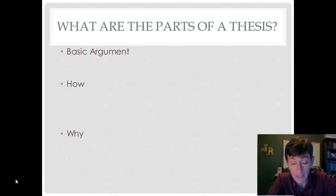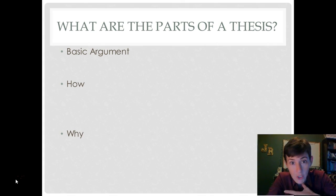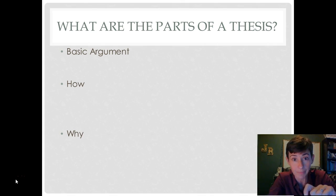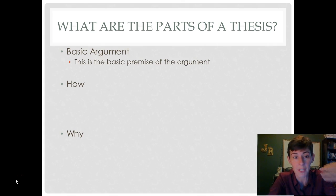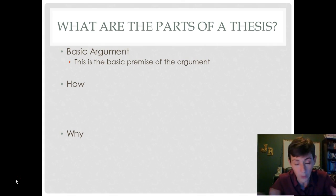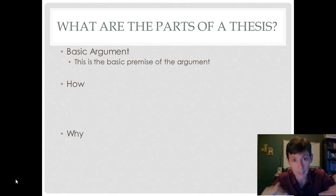So what are the three parts of a thesis? The way I teach it, there are three parts. There's a basic argument, a how, and a why. The basic argument is the basic premise of what you're trying to prove — for example, 'The American Revolution was a success' or 'The American Revolution was a disaster' — whatever point you want to argue. This is the basic concept you're arguing about.